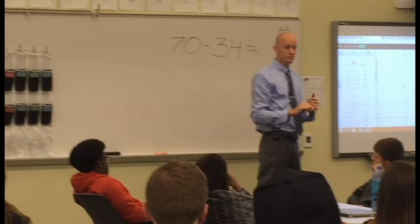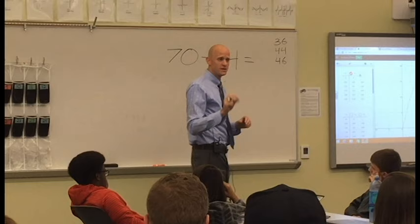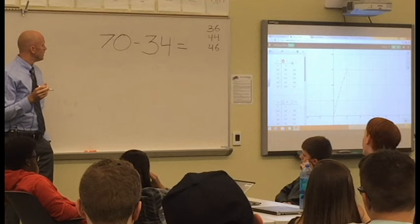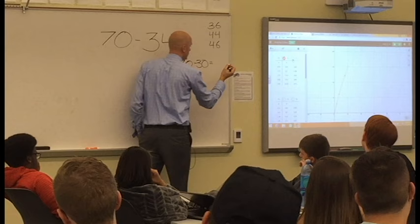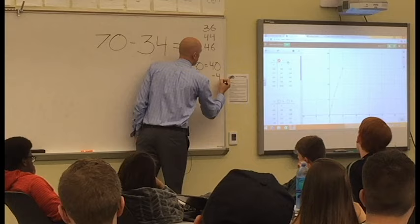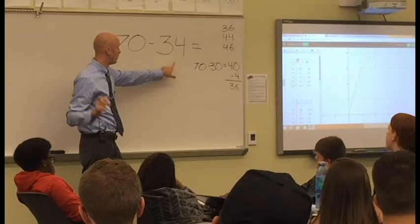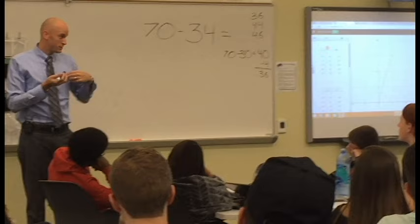Now what we are going to do is I want to get some of your thinking from you. So what you're going to do is defend one of these answers that we have on the board. Do I have a volunteer? Which answer would you like to defend? 36, okay, tell us your thinking. So 70 minus 30, I heard, and that is 40, and then from there you subtracted 4 and came up with 36. So what you did was decompose the 34 into its tens and ones, 30 and 4 ones, and you subtracted those two pieces separately and came up with 36.